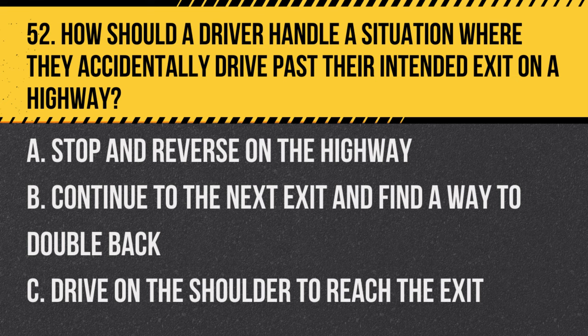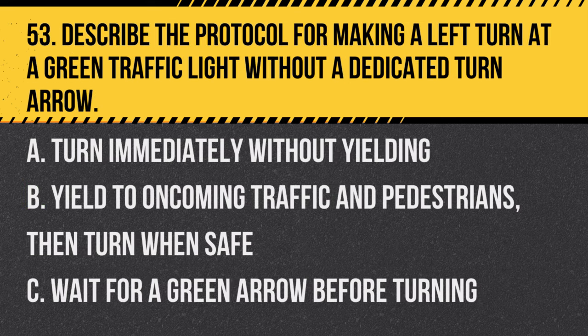Question 52. How should a driver handle a situation where they accidentally drive past their intended exit on a highway? A. Stop in reverse on the highway. B. Continue to the next exit and find a way to double back. C. Drive on the shoulder to reach the exit. Answer: B. Continue to the next exit and find a way to double back. If you miss your exit, it's safest to proceed to the next one.